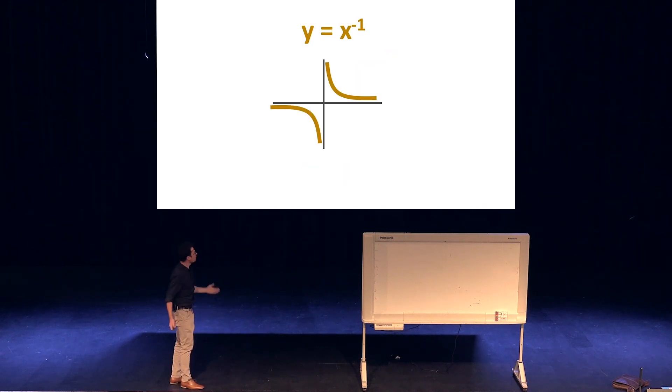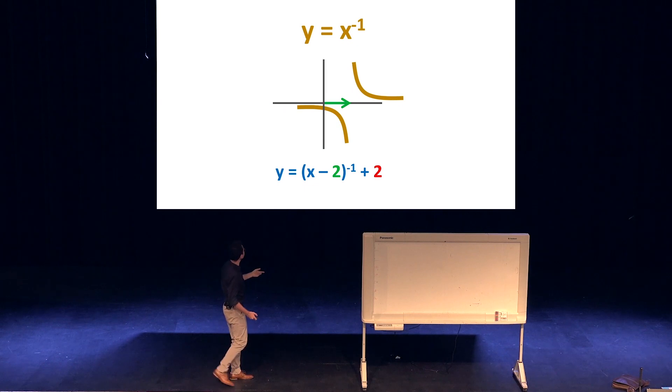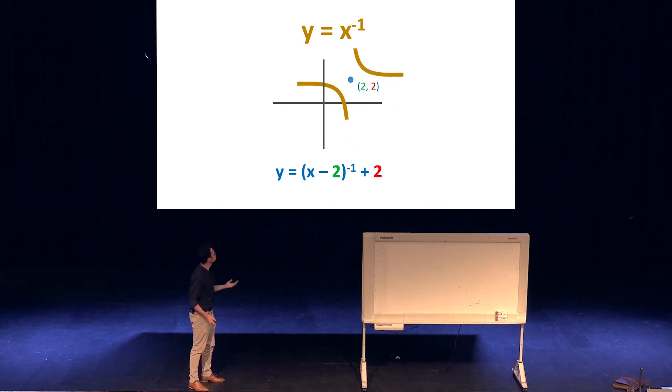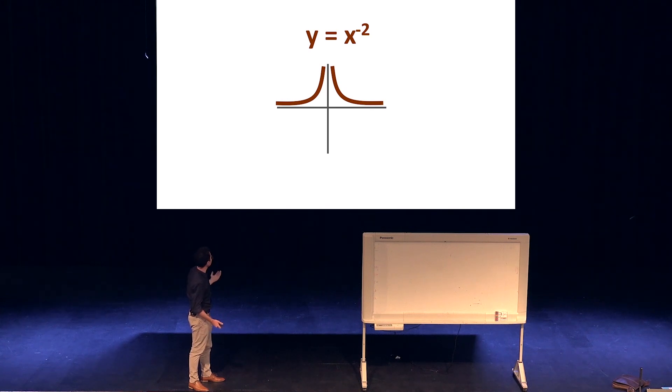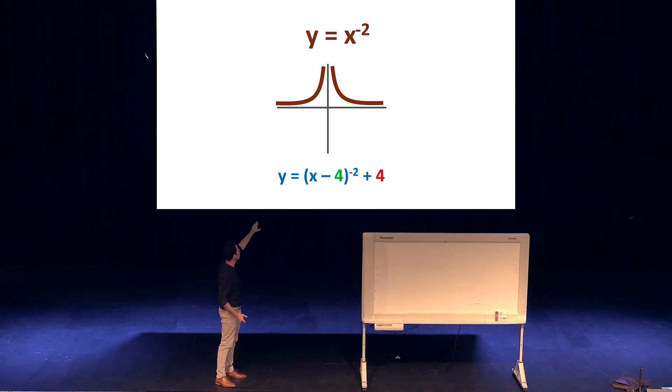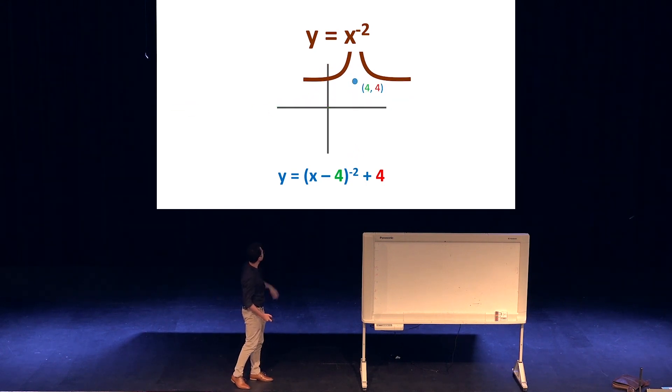Same deal with a hyperbola. You move it over by 2, move it up by 2, and that will be the middle of the graph. And also the same deal with the truncus as well. So we've got y = (x - 4)^(-2) + 4. Well, we'd move it over by 4, and then move it up by 4 as well.